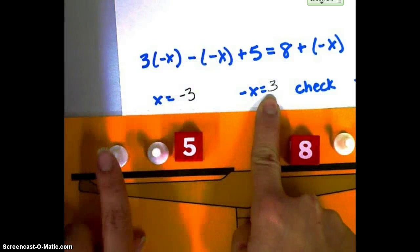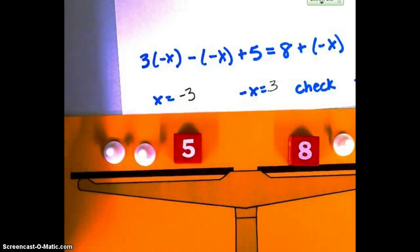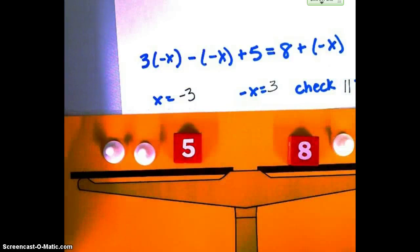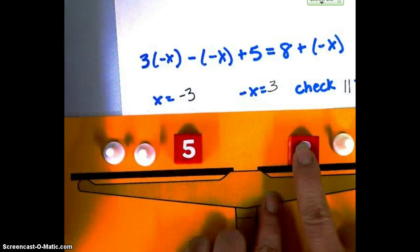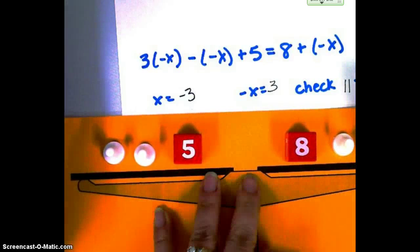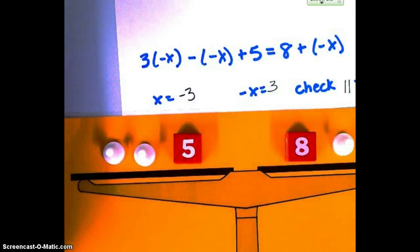So if a negative x is 3, then I've got 3, 6 plus 5. It's going to equal 11. And on this side, I've got 8 plus 3. It's going to equal 11. All right. Thanks for working with me today. Thank you.